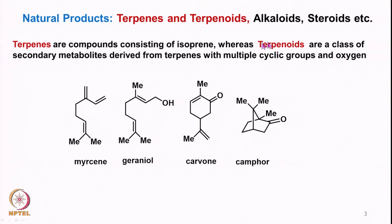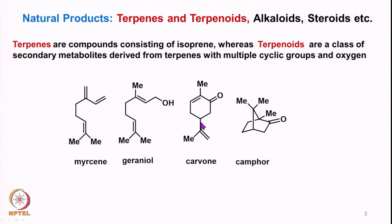Let us take some examples of terpenes. There are monoterpenes, diterpenes, sesquiterpenes, and triterpenes, etc. A few examples are: myrcene, which is a monoterpene; geraniol; and if the double bond has the CH₂OH group pointing below, that means it is trans to the methyl group, then that will be nerol. Then we have camphor, which has an asymmetric center. There are many such molecules classified as terpenes.